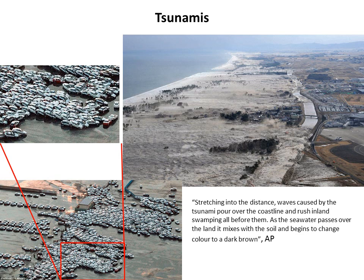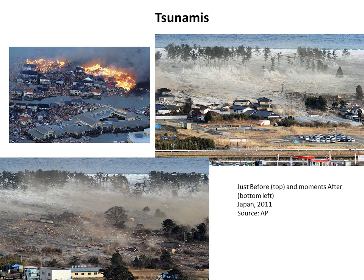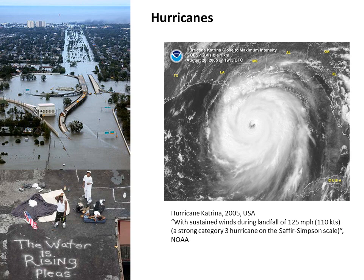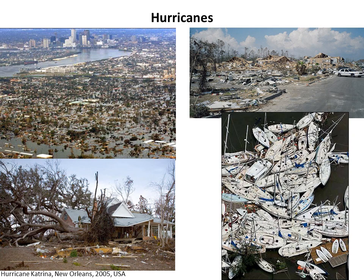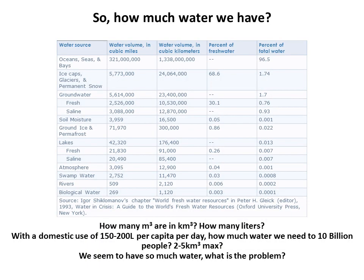We are not only concerned with floods — tsunamis are another problem water can cause. You can see the devastation and power of water in Japan following the major earthquake that hit in 2012. Hurricanes can also cause tremendous destruction — you've probably all heard about Hurricane Katrina, which hit the southern part of the US. These photos show the magnitude of destruction that water can cause to civil engineering structures.